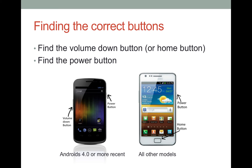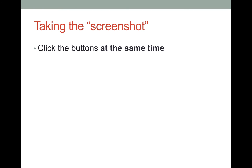For Androids, there are a couple of different ways to take what is commonly known as a screenshot. On most Android devices using software 4.0 or more recent, you need to locate the power button and the volume down button. On all other Android devices, you should locate the power button and the home button, which is at the center of the bottom of the device. Once you have located these buttons depending on your Android, click both simultaneously to capture the screen.